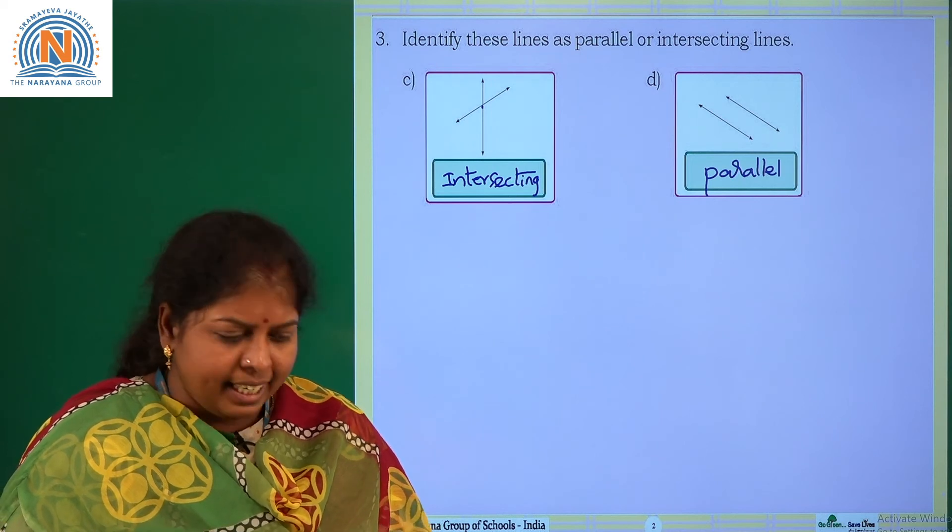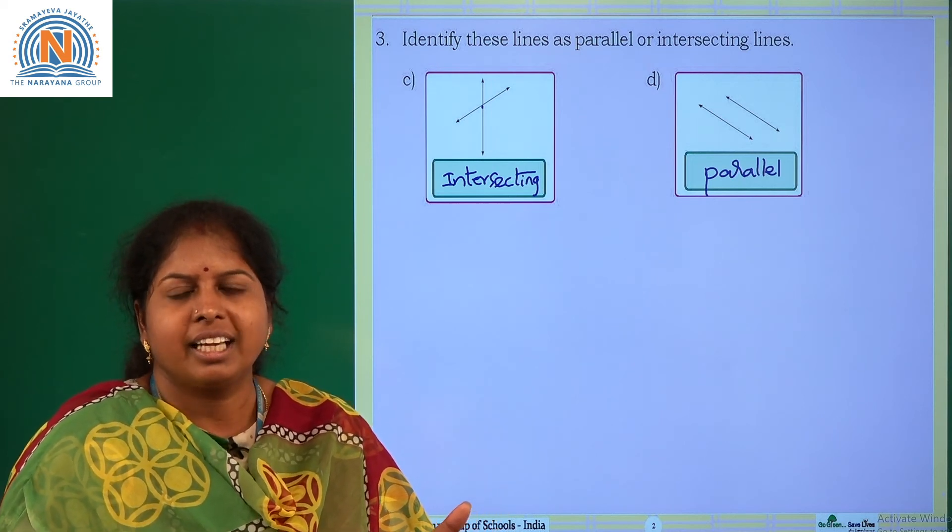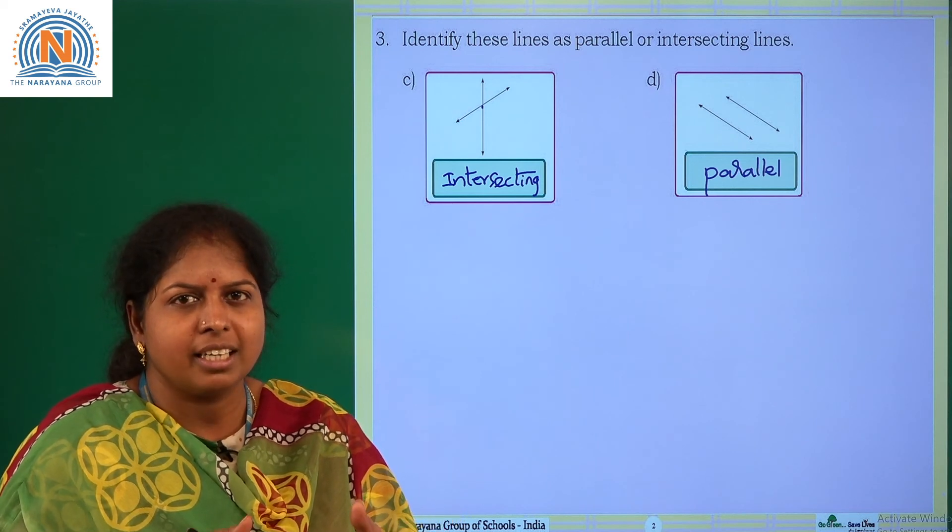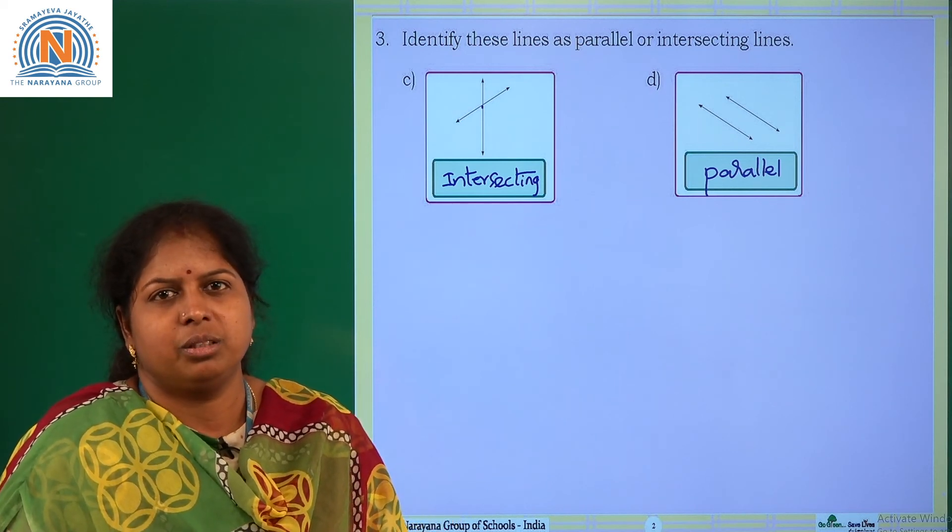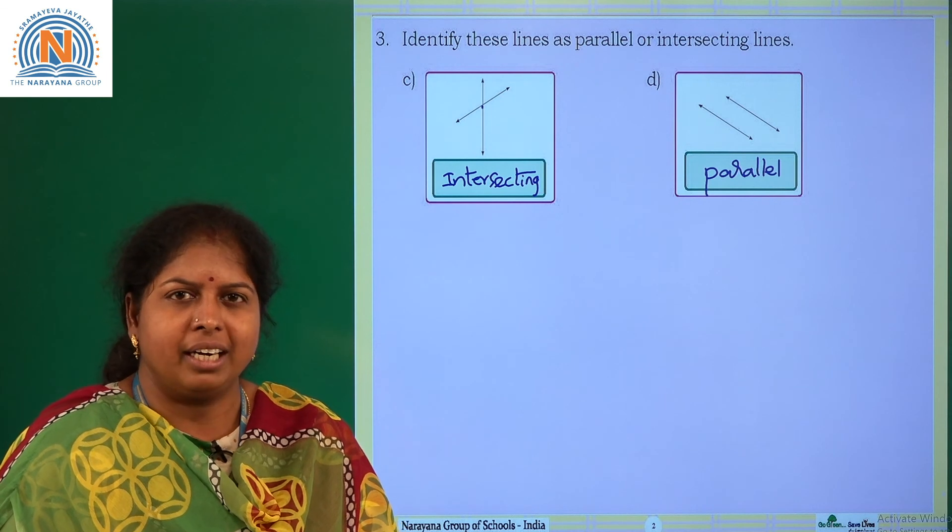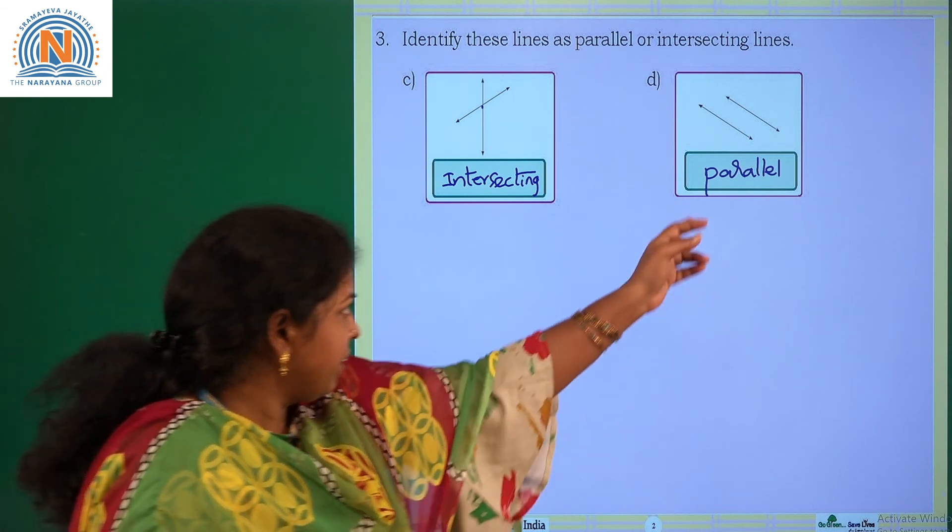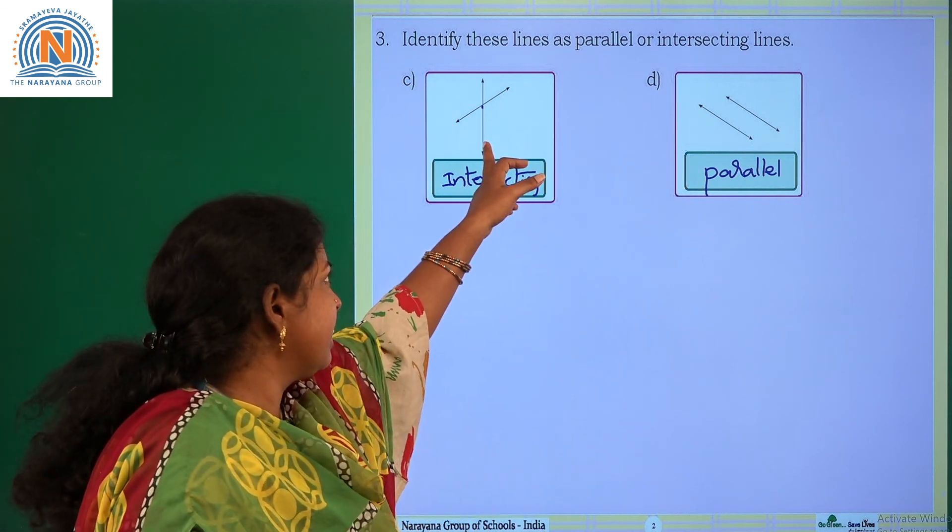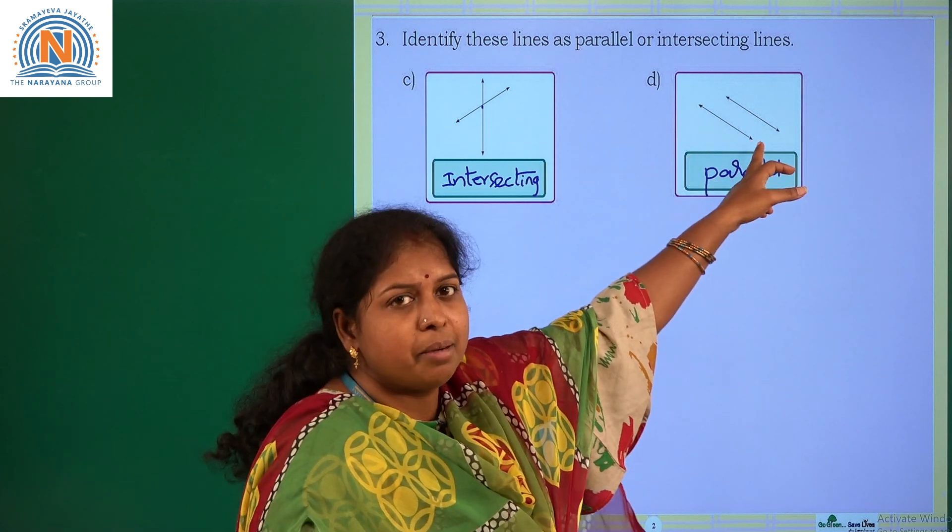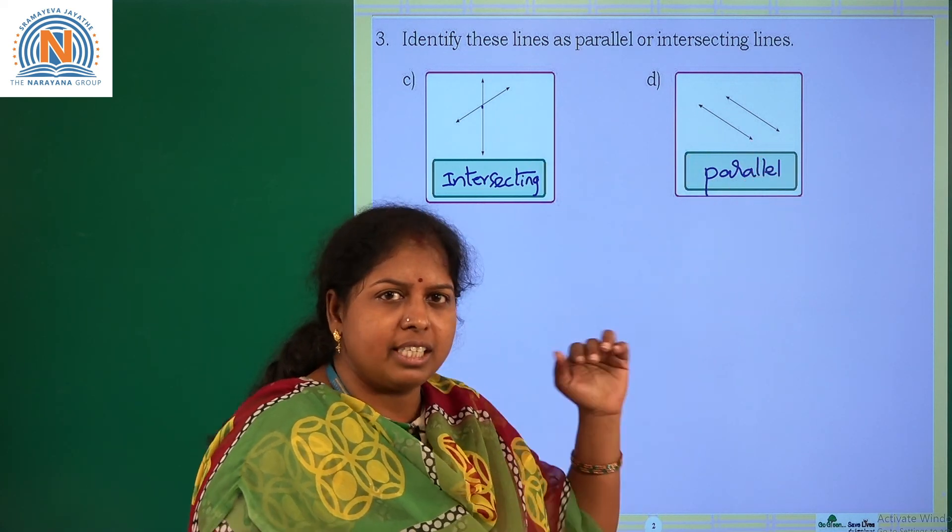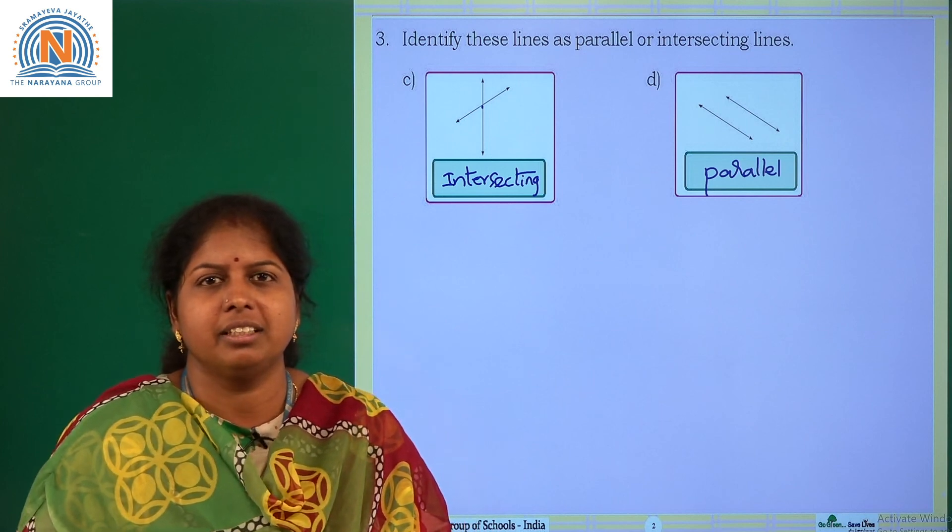You won't find anywhere the two lines are touching. That means the two lines are not intersecting, so they are the best example of parallel lines. So the given lines - first one is intersecting lines and the second one is parallel lines. Okay children, hope you understood the session. Thank you.